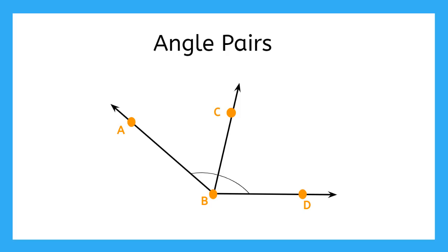Sometimes we have two angles that are connected. Here we have angle ABC and angle CBD. When this happens, they are called angle pairs. There are two special kinds of angle pairs.